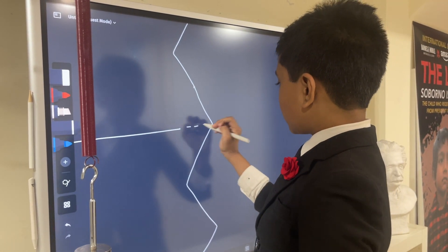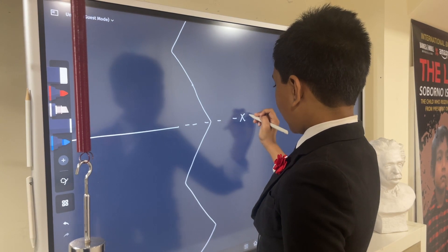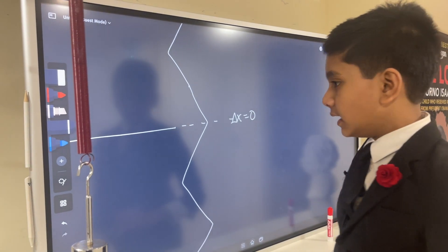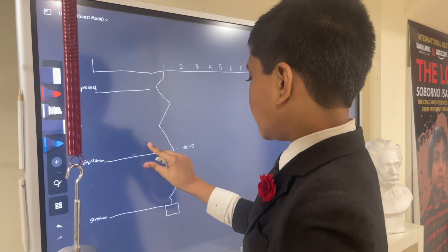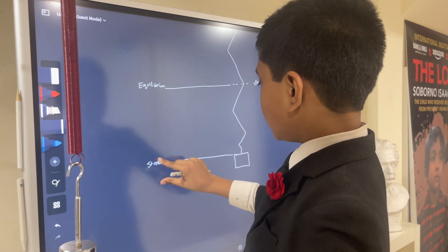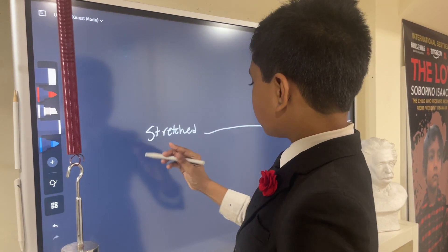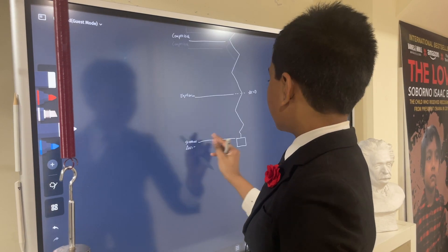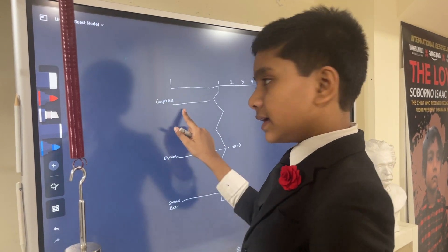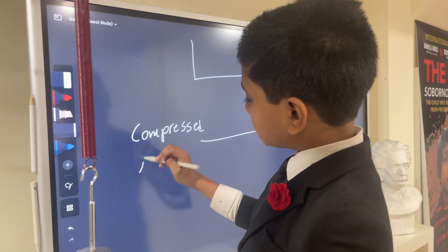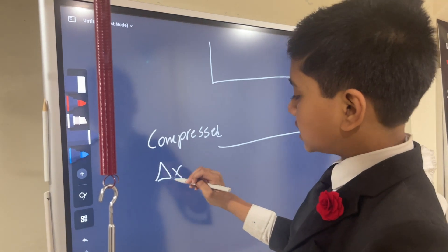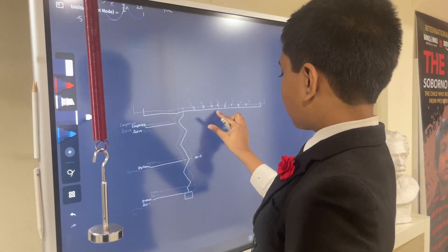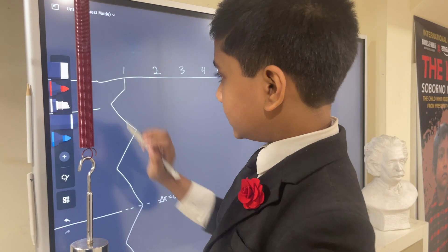If this is equilibrium, we're going to consider this line x — or delta x — the displacement. The displacement delta x equals zero at equilibrium. When it's stretched, delta x is going to be negative because it's below the line, and for the compressed state delta x is going to be positive since it's above the line.